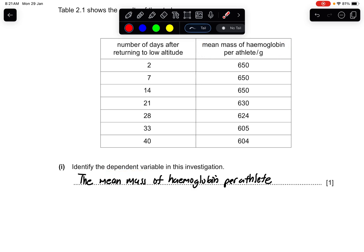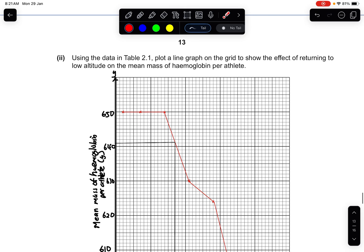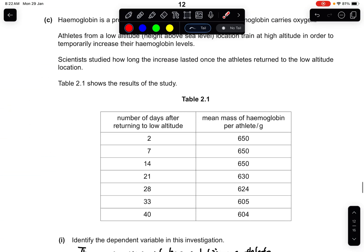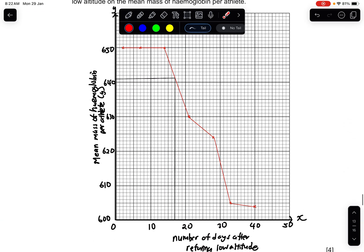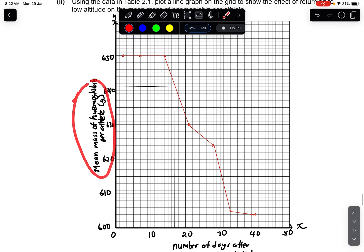Part two: Using the data in table 2.1, plot a line graph on the grid to show the effect of returning to low altitude on the mean mass of hemoglobin per athlete. Just use all the results from here and then make a graph. The graph will just look like this - have suitable units, your axes must also be added, and then a suitable line must be drawn.